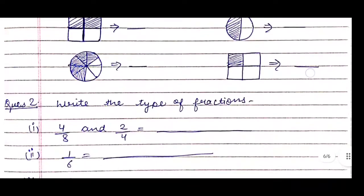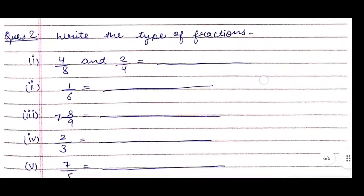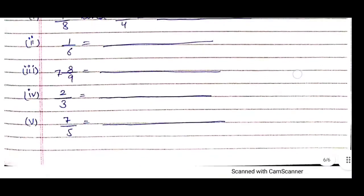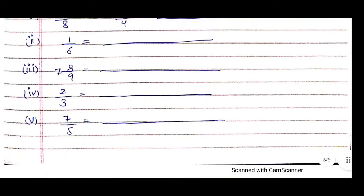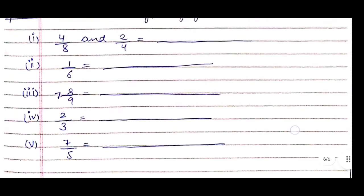The second homework question is: write the type of fractions — students have to identify the type. The fractions given are: first, 4/8 and 2/4; second, 1/6; third, 7 and 8/9; fourth, 2/3; fifth, 7/5.